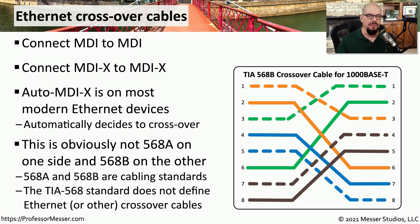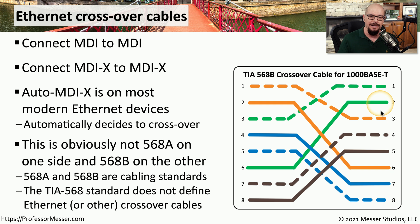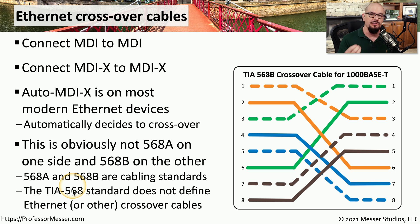One common misnomer with crossover cables is that one side is wired to TIA-568A colors and the other side to TIA-568B colors. As you can see with the crossover cable for 1000BASE-T, that's actually not the case. One side is configured for 568B, but the other side is neither 568A nor 568B colors. The determination of wire colors comes from the TIA-568 standard, but what makes a crossover cable comes directly from the IEEE 802.3 Ethernet standard.